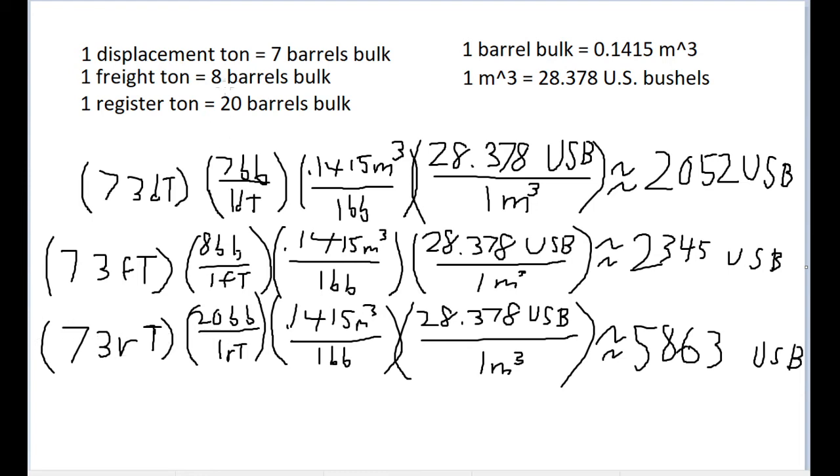For register tons, of course, it's 20 barrels bulk per register ton. Again, doing the same type of conversion, you get 5,863 U.S. bushels about.